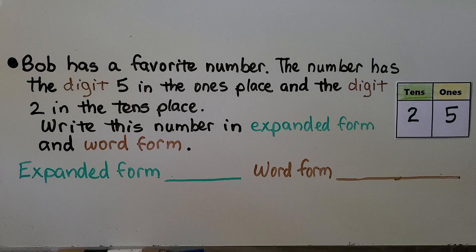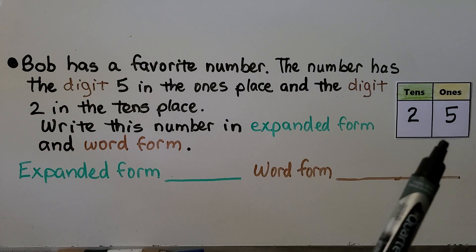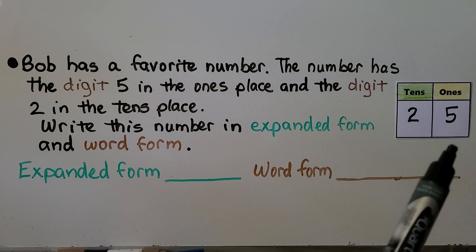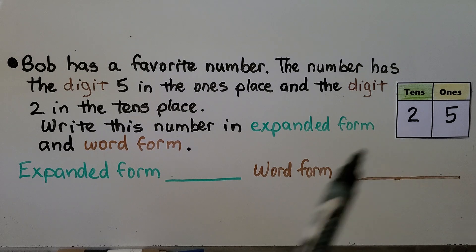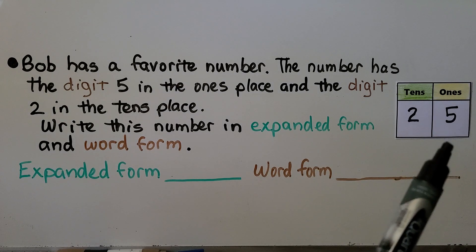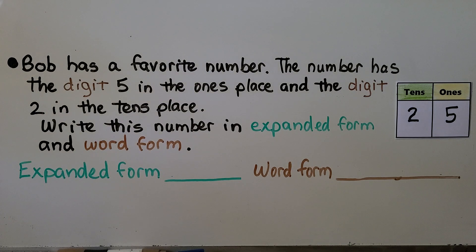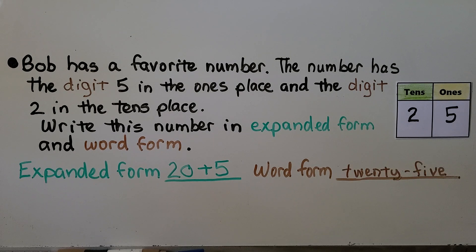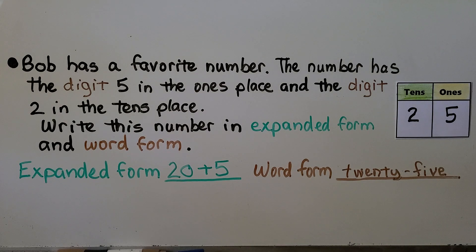Bob has a favorite number. The number has the digit five in the ones place and the digit two in the tens place. We can use a place value chart to help us. We can see there are two tens and five ones. Expanded form uses a plus sign: 20 plus 5. And we can write 25 in word form: twenty-five, with a hyphen between twenty and five.